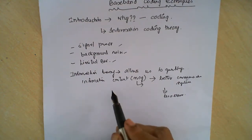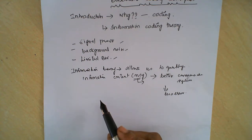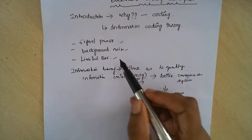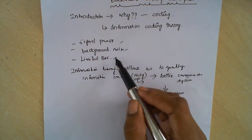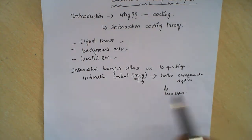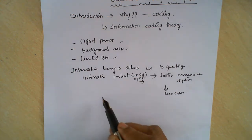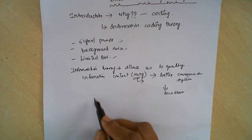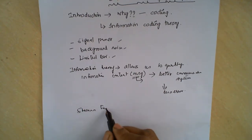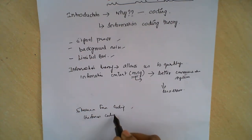Information theory is nothing but the transmission of messages in terms of zeros and ones. These zeros and ones, while transmitting, have considerations of signal power, background noise, and limited bandwidth, and performance is much better when using information theory. This paved the path for Shannon-Fano coding, Huffman coding, and Lempel-Ziv coding.